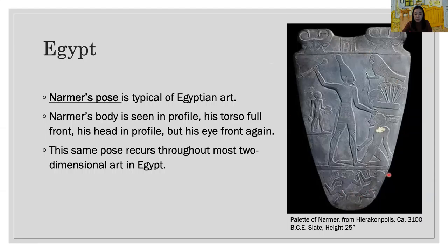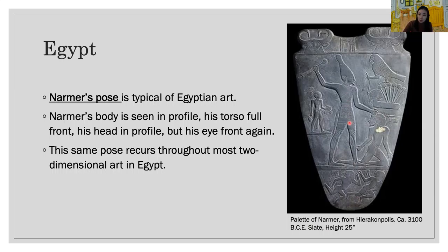This is the Egyptian two-dimensional art style. Most Egyptian two-dimensional art repeats the same pose — it is called the Narmer pose, seen on the Narmer palette. When depicting an important personage, the Egyptian artist strove to show each part of the body to best advantage so it could be read clearly by the viewer. Narmer's body is seen in profile, his torso full front, his head in profile, but his eye front again. This same pose recurs throughout most two-dimensional art in Egypt.